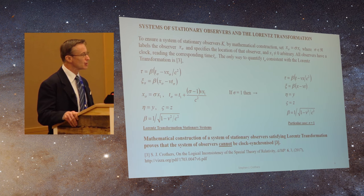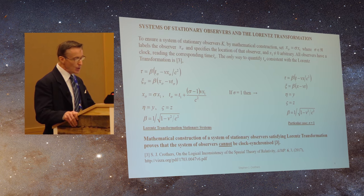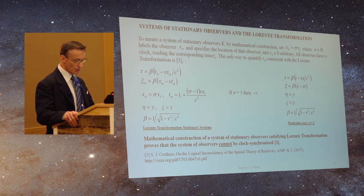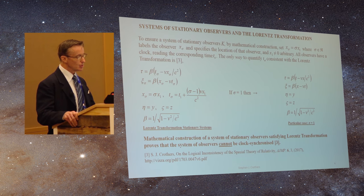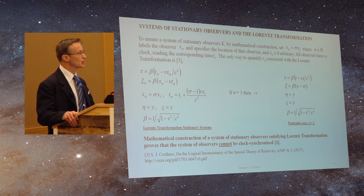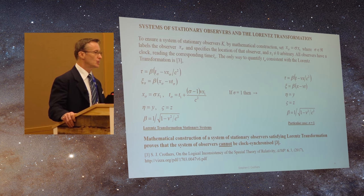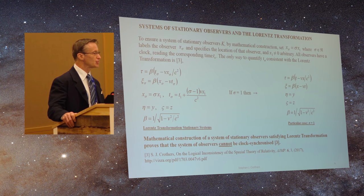This is an infinite set of observers. And if I make this system now consistent with Lorentz transformation, we find that the system can't be clock-synchronized. As you see, the time changes subject to sigma. If sigma equals one, you have Einstein's privileged observer. The privileged observer violates the basic tenet of his theory that there is no privileged observer.